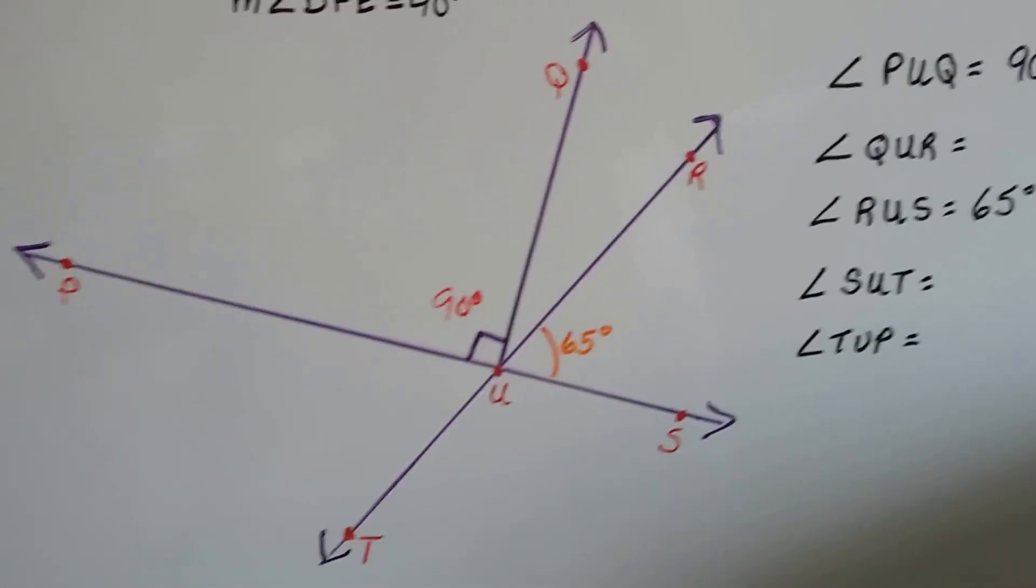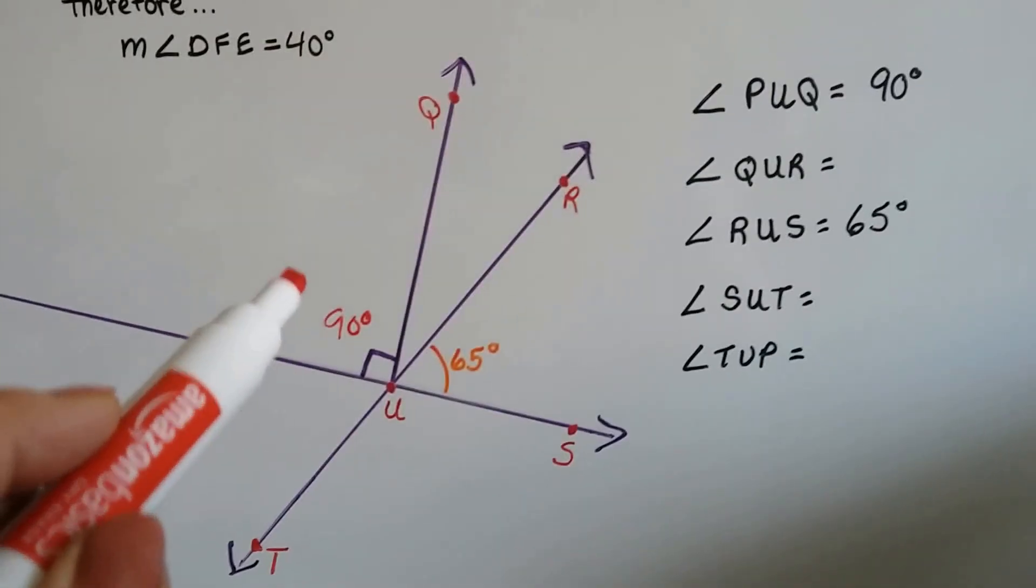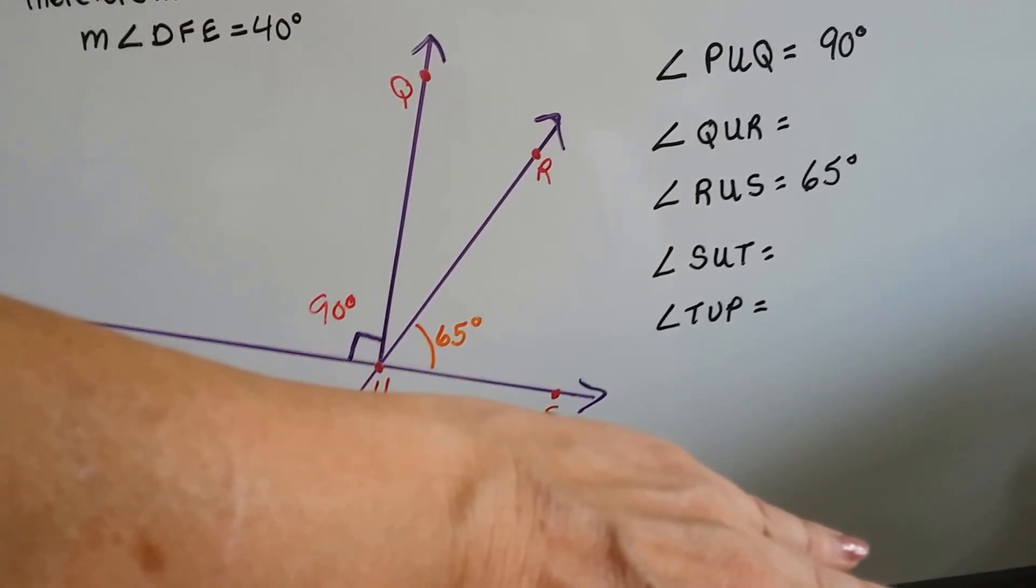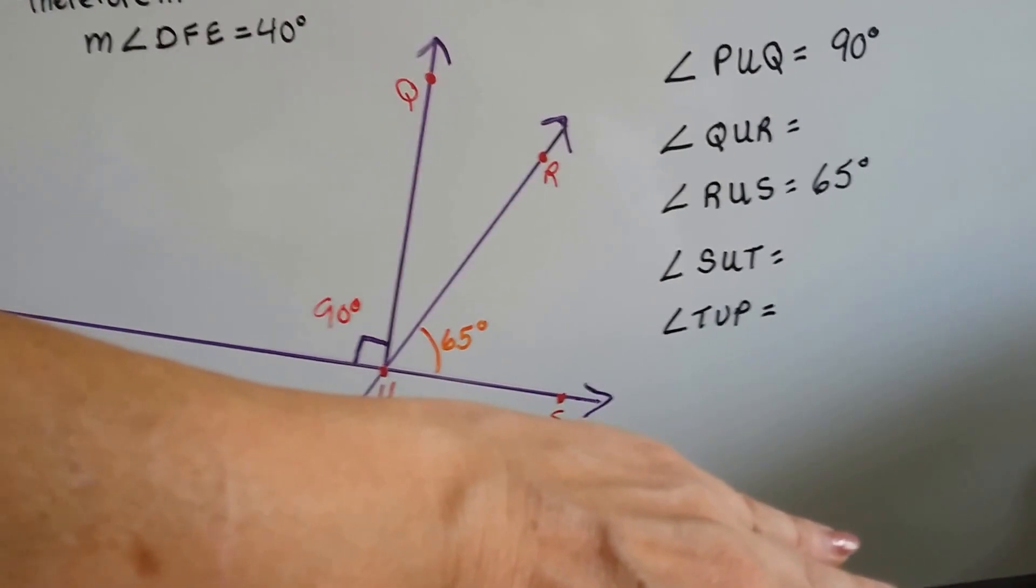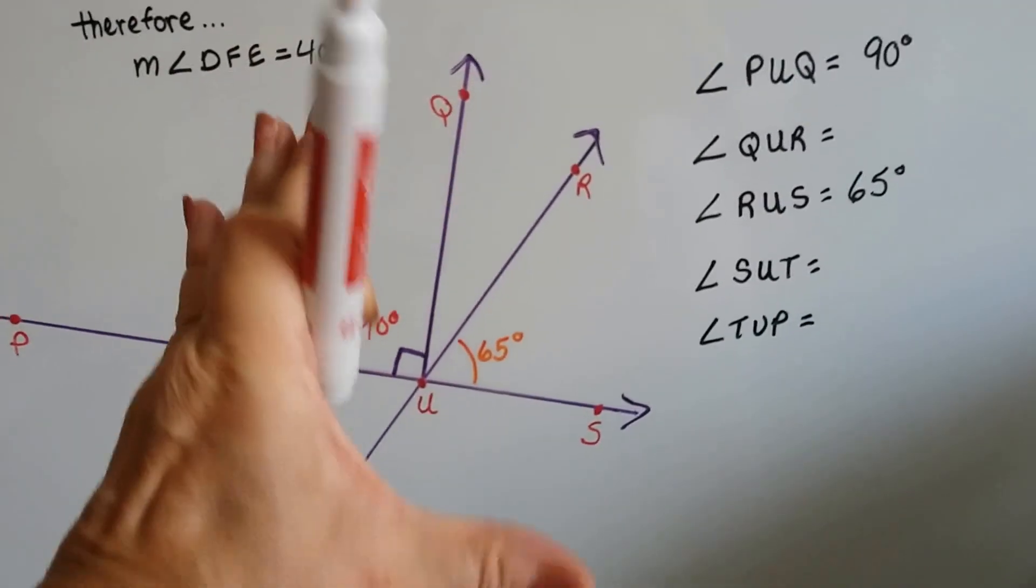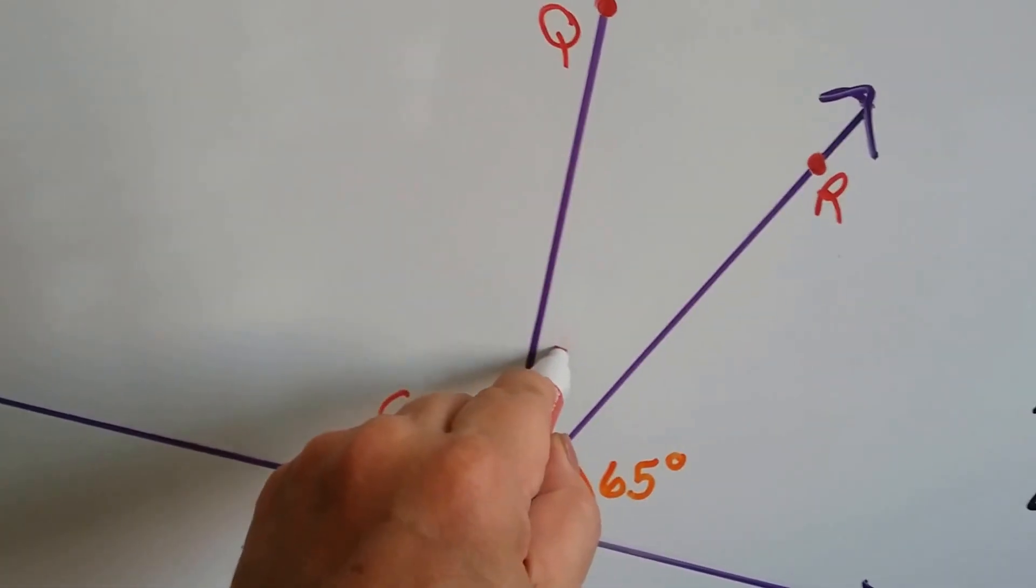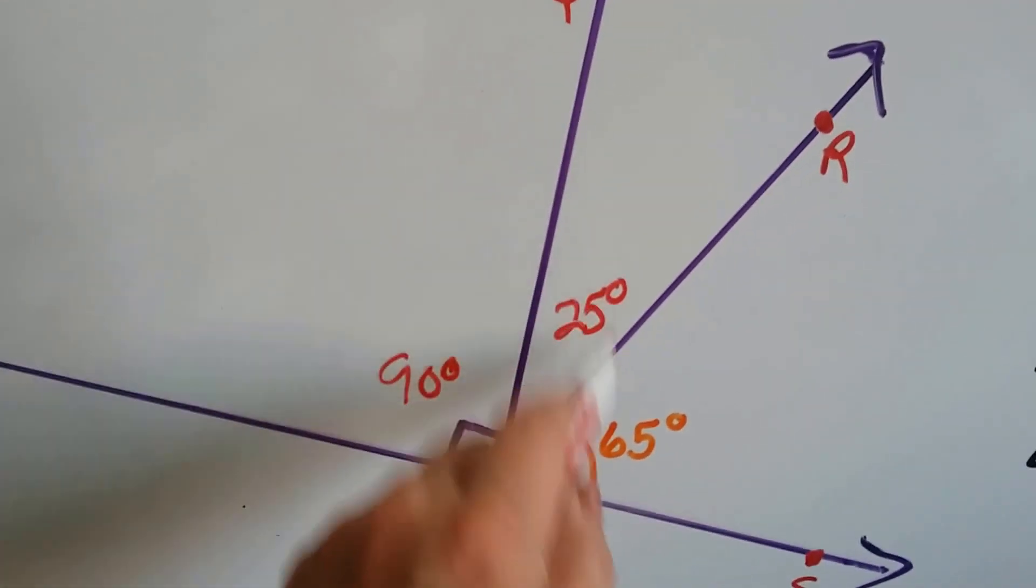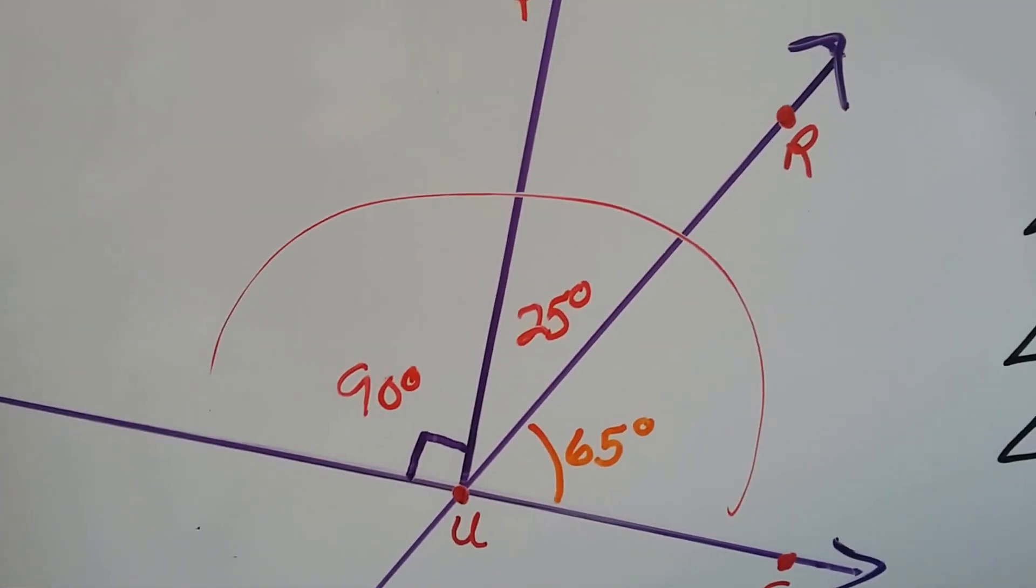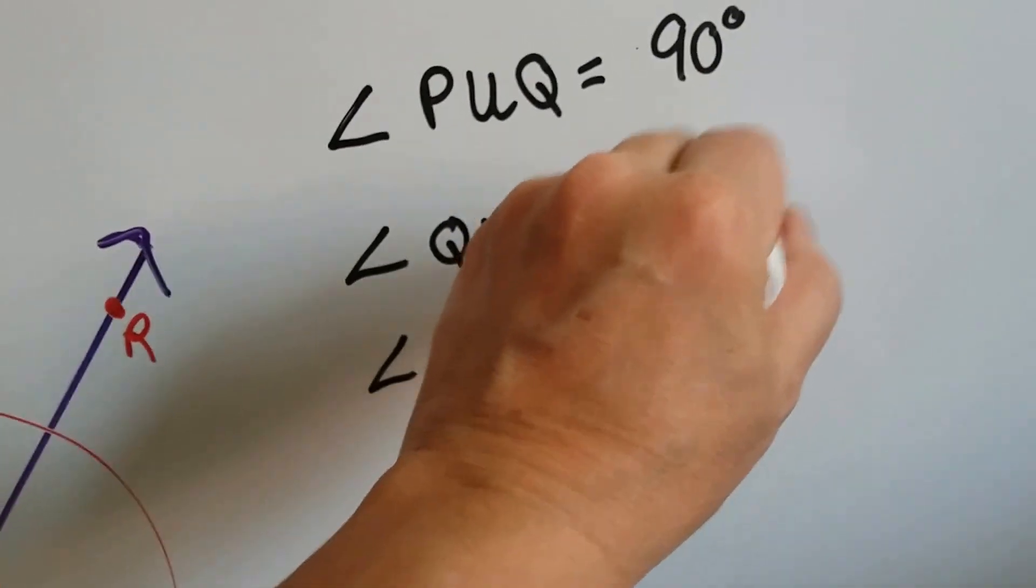So I wrote those in, because those are given. That's called the given. It's whatever they just gave to us for free. So what could angle Q, U, R be? This one. If that's 90 and that's 65, wouldn't they make a supplementary angle together? A 180 degree angle? So what's missing? What measure is missing from 180? Well, 90 and 90 makes 180. So what's missing from this one to make 90? 25 degrees.